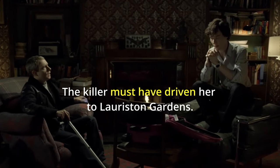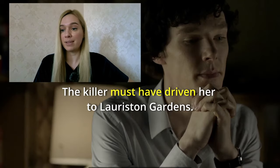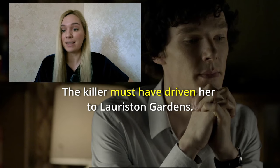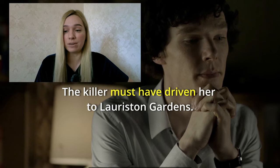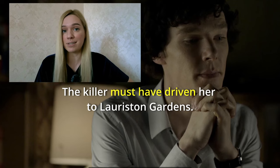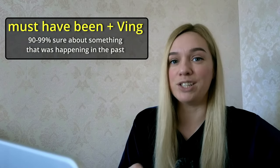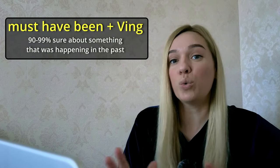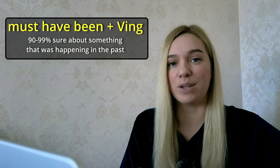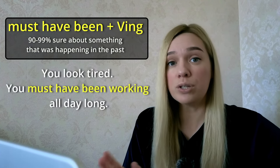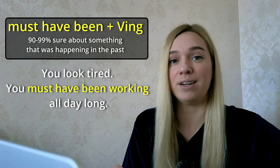'The killer must have driven her to Lauriston Gardens.' Sherlock believes the killer drove his victim to Lauriston Gardens. We use 'must have been' plus verb-ing when we are sure about something that was happening in the past. For example: 'You look tired. You must have been working all day long.'